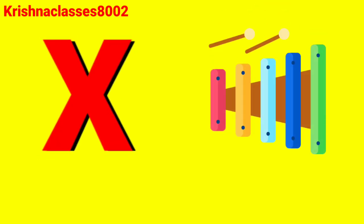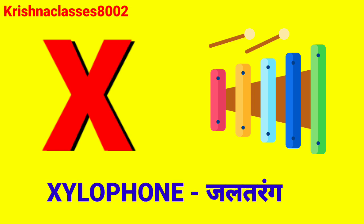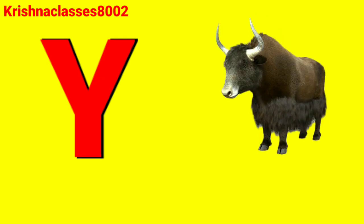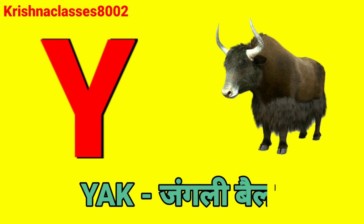X for gylophone. Gylophone means jaltaran. Y for yark. Yark means jungle bell.